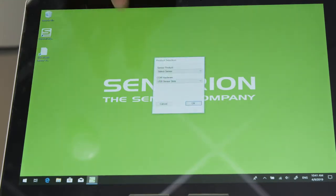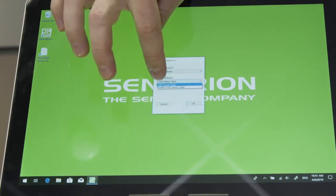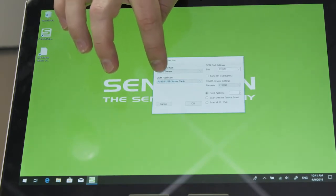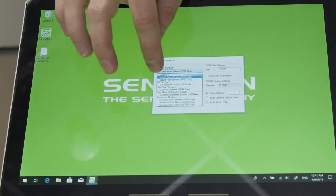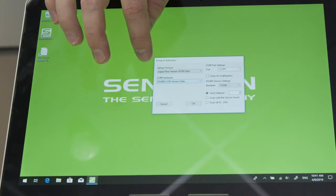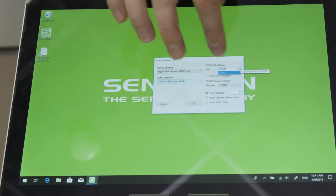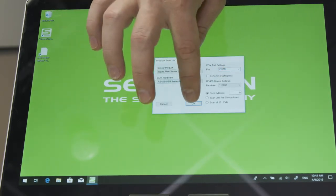Now start the viewer software. First choose the RS-485 USB sensor cable and select liquid flow sensor SF-06 chip. Then choose the COM port that shows USB serial port and press OK.